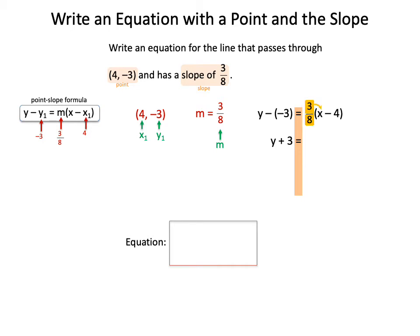You're going to multiply 3/8 times x to get 3/8 x, and then you'll multiply 3/8 times negative 4. I've got a little whiteboard for you to show you what, if you want to do it by hand, but when you do that multiplication, you should get -3/2, and we're going to write that as minus 3/2.